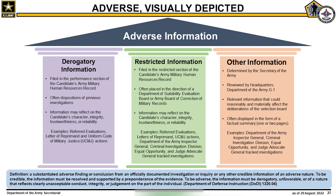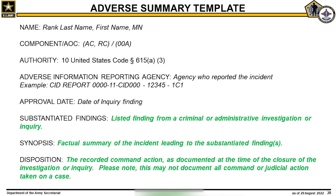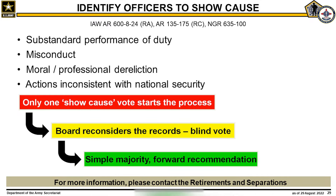Relevant information that could reasonably and materially affect the deliberations of the selection board will be presented in the form of an adverse summary. This is an example of an adverse summary, which outlines the candidate's name, the agency who reported the incident, and the date the inquiry was found. It provides a listed finding from a criminal or administrative investigation or inquiry, a summary of the incident, and the final disposition. Board members may or may not have access to the original investigation. Any Department of the Army Selection Board, including Promotion, Schools, or Command Boards, can recommend a candidate to show cause unless otherwise indicated in the Board's MOI. Additionally, a show cause action can be initiated by the Commanding General of HRC or by an officer's chain of command.